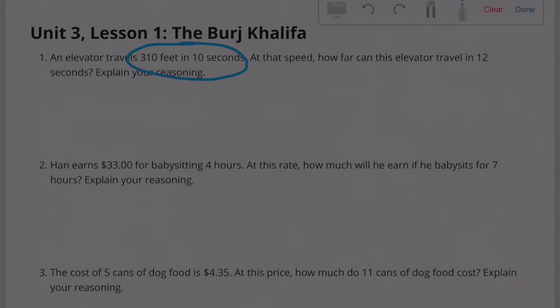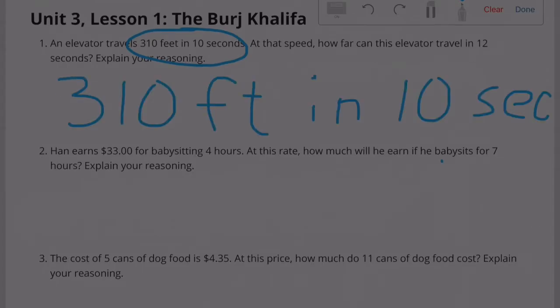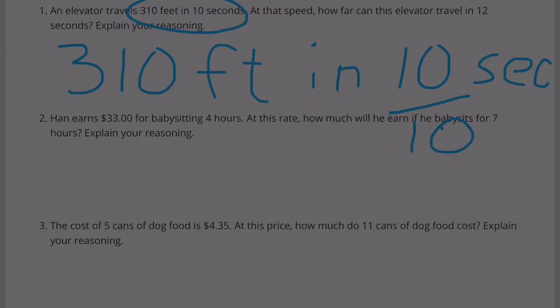The elevator goes 310 feet in 10 seconds. I'm going to divide the seconds by 10 to make it just 1 second. Now I'm going to divide the feet by 10 and do this by scooting the decimal over once. So I know that it travels 31 feet in 1 second.